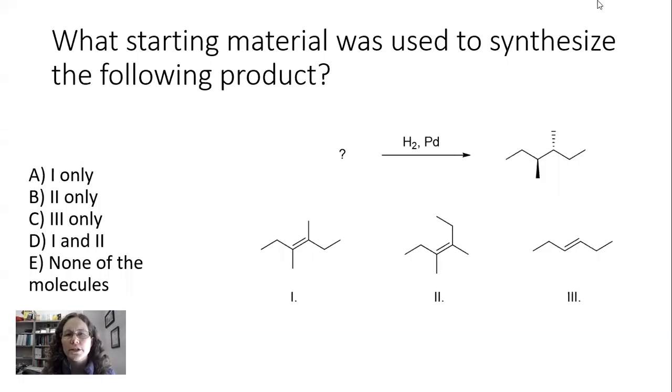This practice problem asks what starting material was used to synthesize the following product. We have an addition reaction, and we're going to try to work our way backwards. You have to think about the product that you have, what got added across the pi bond, the regiochemistry of the reaction, and the stereochemistry of the reaction.